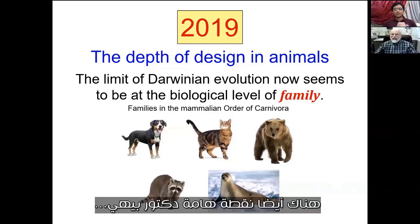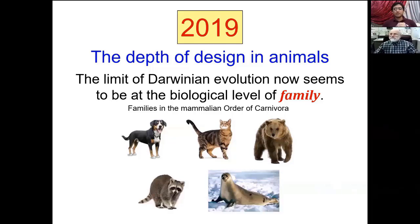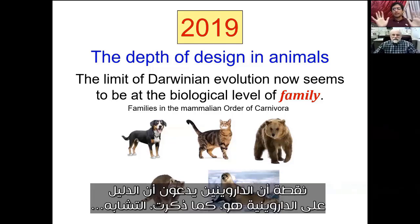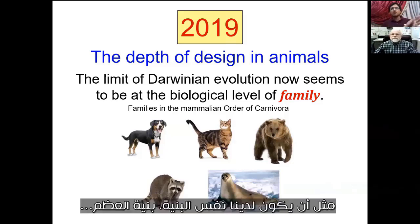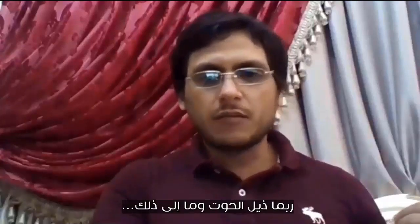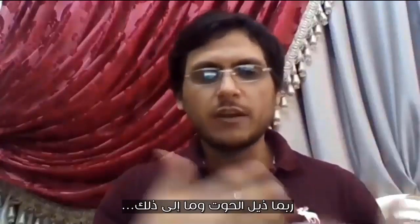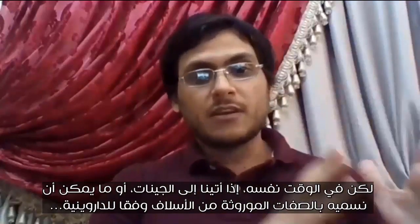There's also an important point, Dr. Behe. Darwinists claim that the proof for Darwinism is, as you mentioned, the homology — the outside appearance — like we have the same bone structure in the hands, or maybe the tail of the whale and so on.